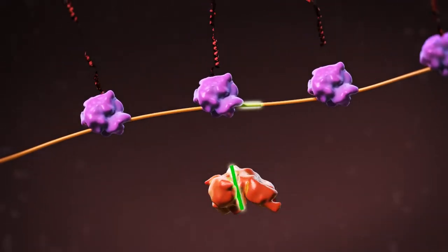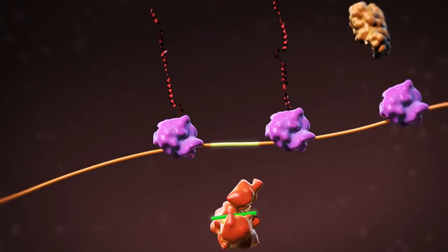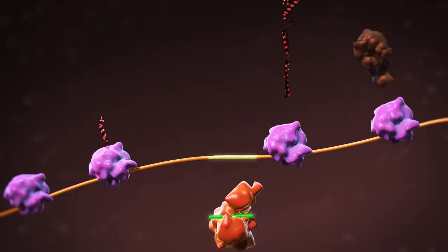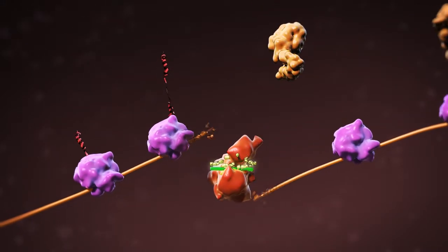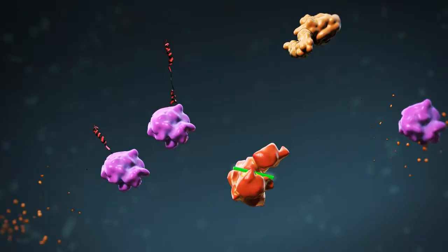This complex pairs with the messenger RNA of the targeted gene. As a result the messenger RNA breaks down, halting the production of the specific protein.